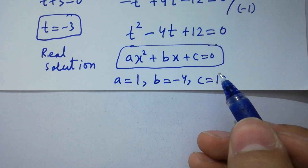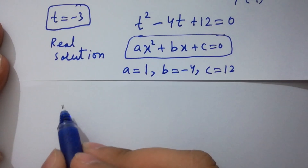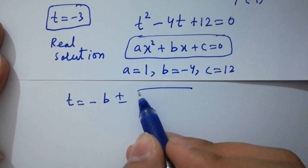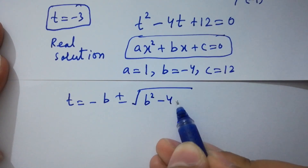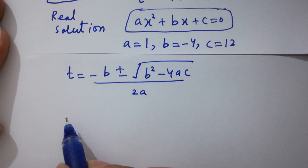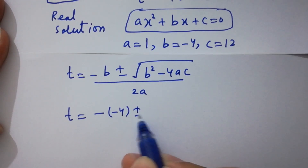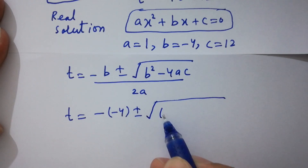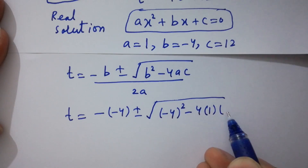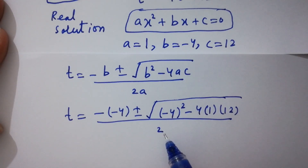Applying the quadratic formula: t equals minus b plus or minus square root of b-squared minus 4ac, over 2a. Substituting values: b is minus 4, so minus b is plus 4, plus or minus square root of (minus 4)-squared minus 4 times 1 times 12, over 2 times 1.